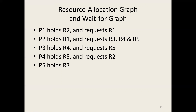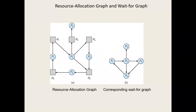After drawing the resource allocation graph, we can draw the corresponding wait-for graph. P1 requests R1, and R1 is already being held by P2, so P1 is waiting for P2. P2 requests R3, and R3 is already being held by P5, so P2 is waiting for P5. Like that we can draw the wait-for graph.